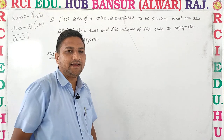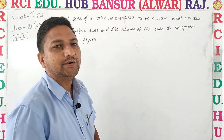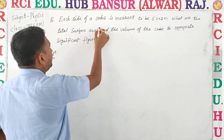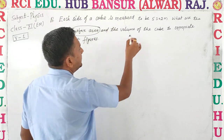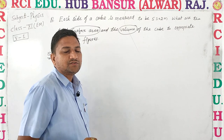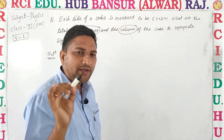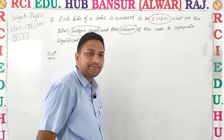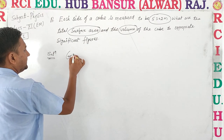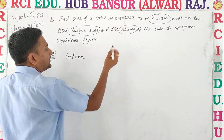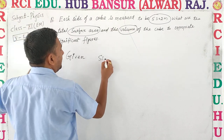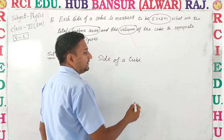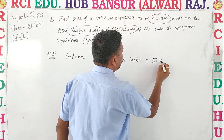The most important thing is that we have a given value, and we need to see how many significant figures it has, or calculate accordingly. इसको देखते हैं तो आपके पास यहाँ जो given है वो है side of cube, और given है आपके पास 5.302 meter.